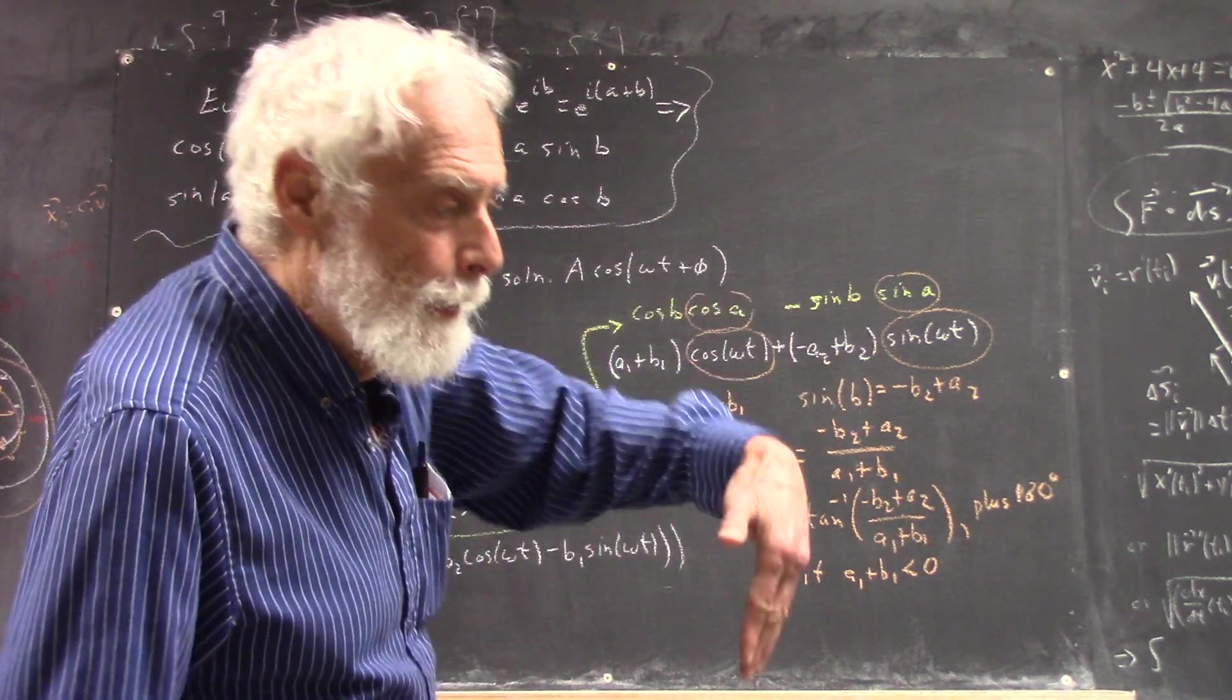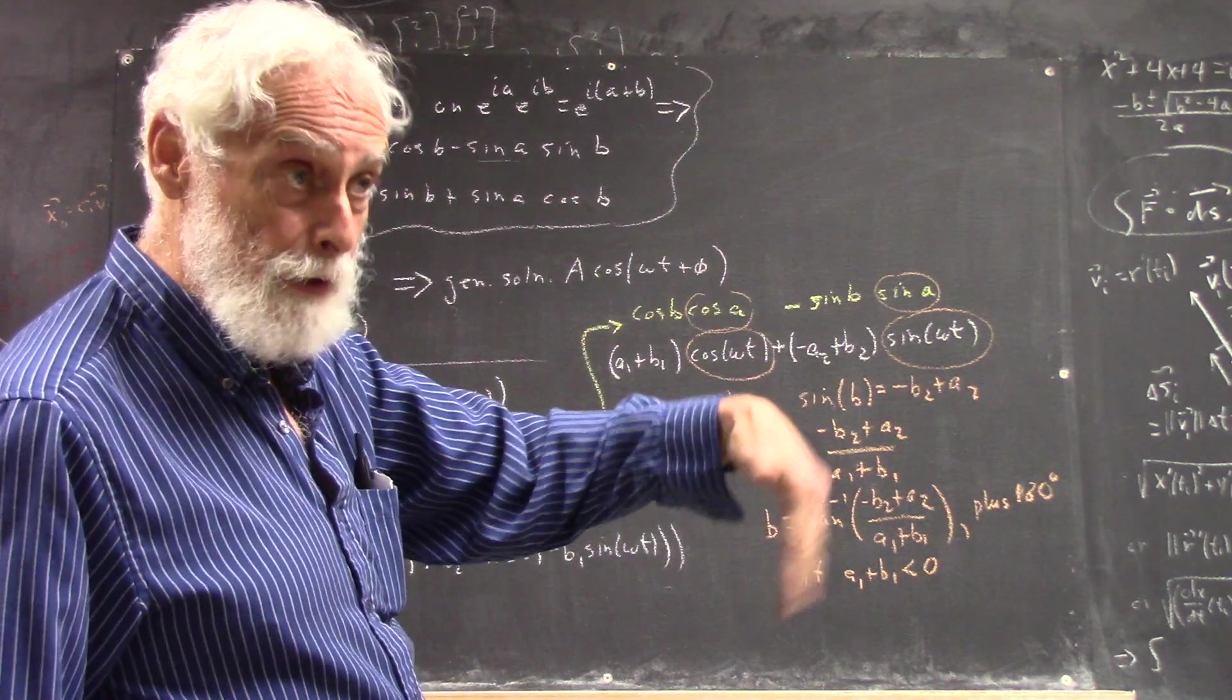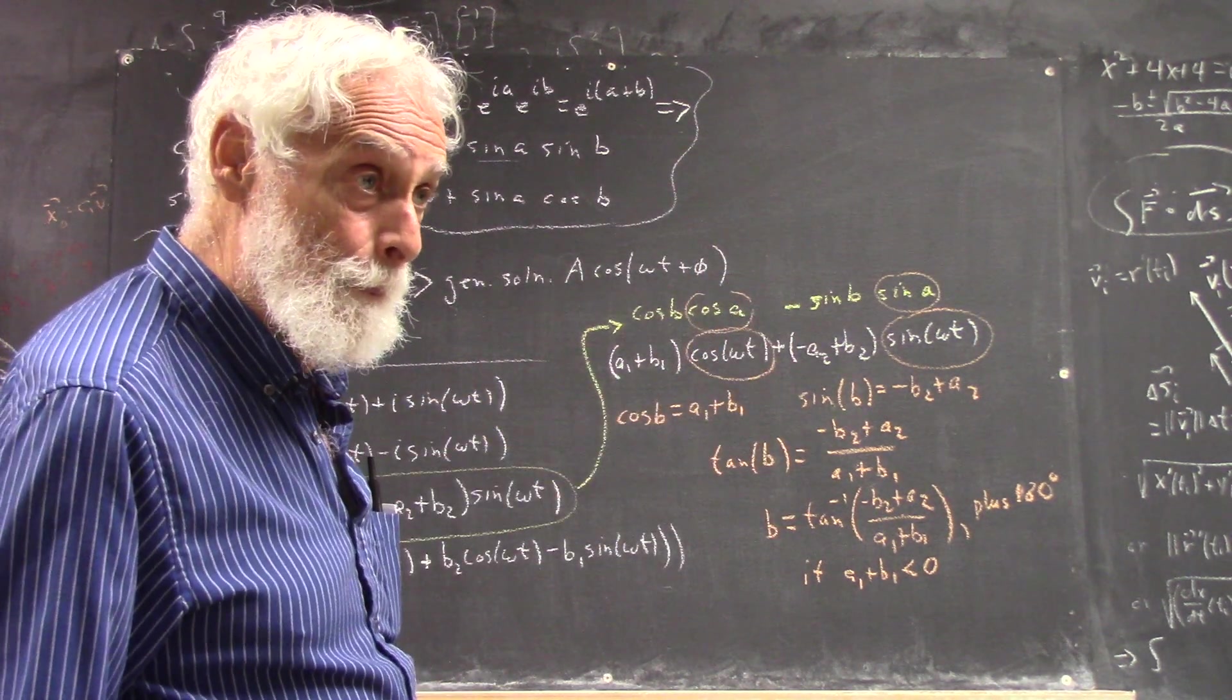Arctangent is between 3 pi over 2, well, negative pi over 2 and pi over 2, negative 90 degrees to 90 degrees, right?